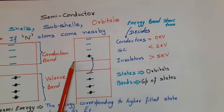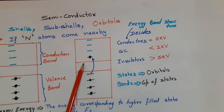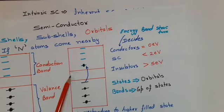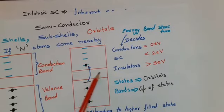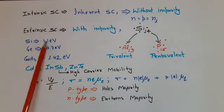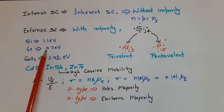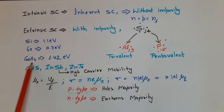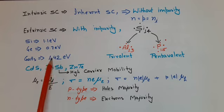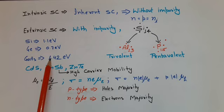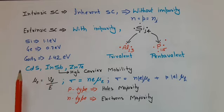In P-type semiconductor, holes are majority carriers and the Fermi energy level exists near the valence band. In N-type semiconductor, electrons are majority carriers and the Fermi energy level is closer to the conduction band. In intrinsic semiconductor, the Fermi energy level is in between. If we look at the energy band gap values: for silicon it is 1.1 eV, for germanium it is 0.7 eV, and for gallium arsenide it is 1.42 eV. These values are at room temperature, which means 25°C or 298 K — sometimes taken as 300 K.